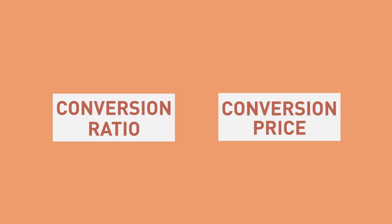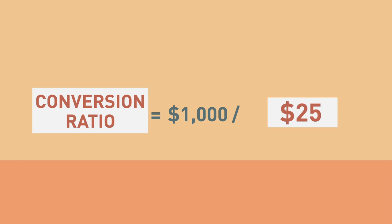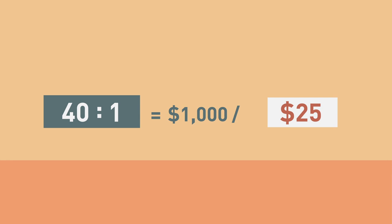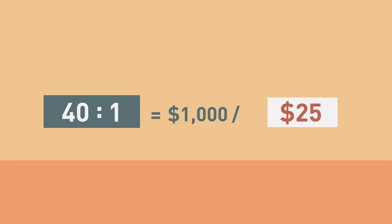The conversion ratio, an expression of the number of shares of common stock for which a convertible bond may be exchanged, can be found by dividing the par value of the bond, typically $1,000, by the conversion price. For example, if a convertible bond has a conversion price of $25, the conversion ratio is 40 to 1. This means that the bond could be converted to common stock once the underlying stock price reaches $25, at which point the convertible bondholder will receive 40 shares of the issuer's common stock.